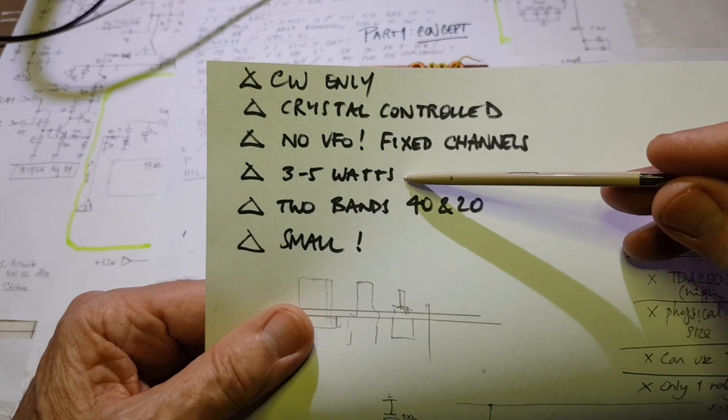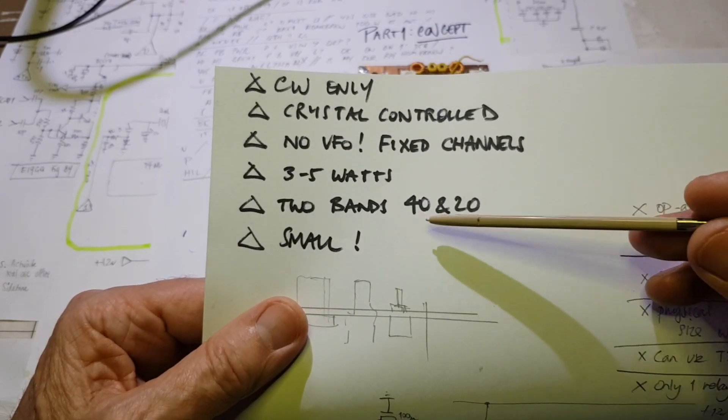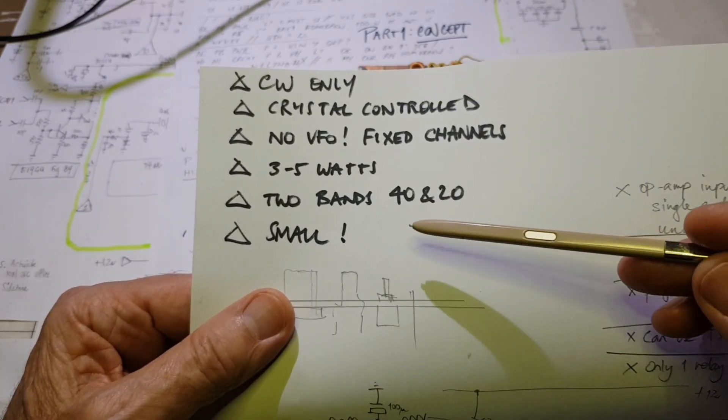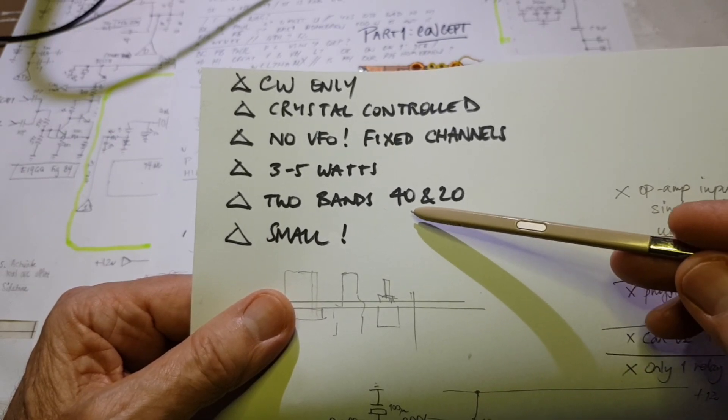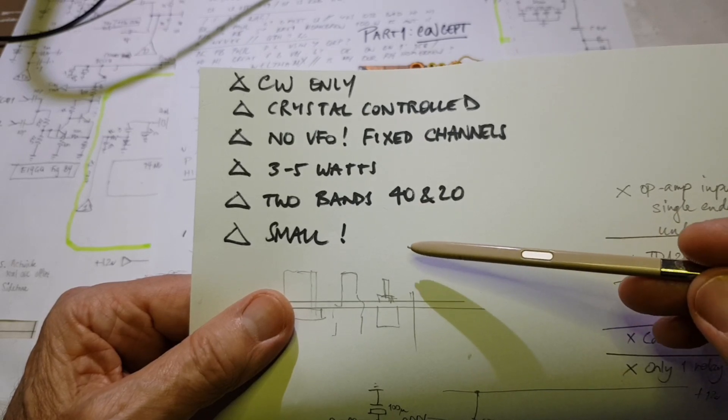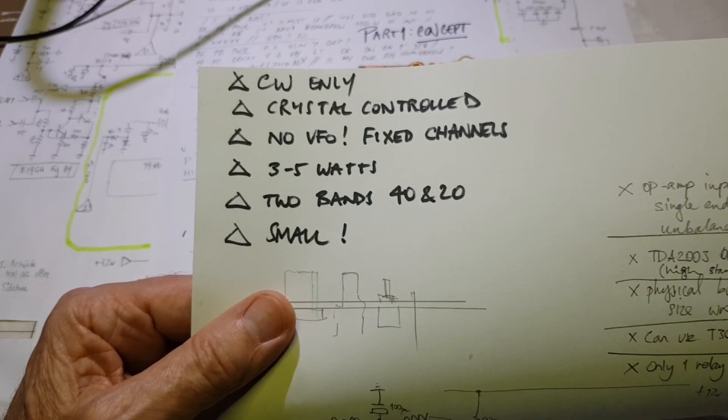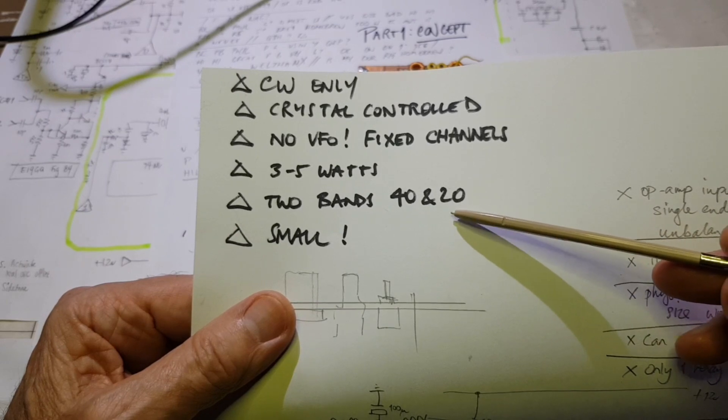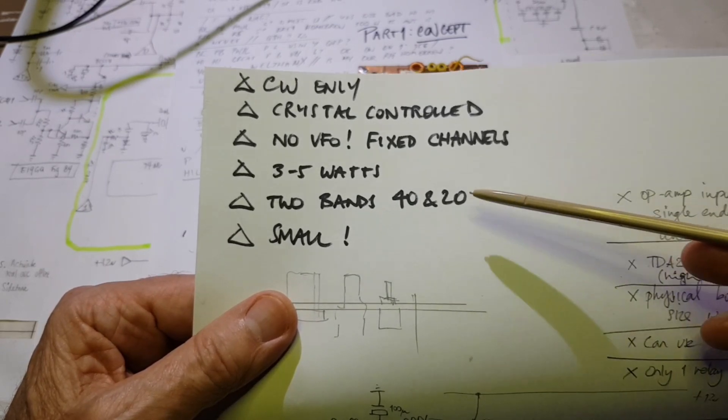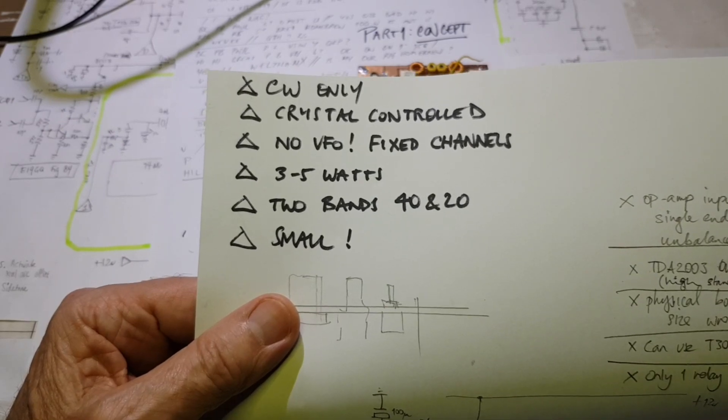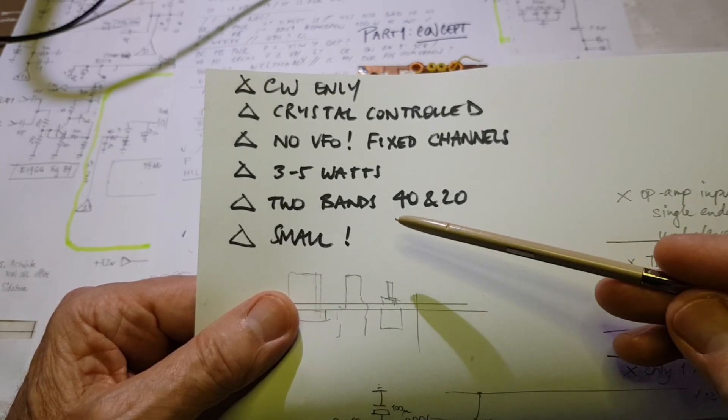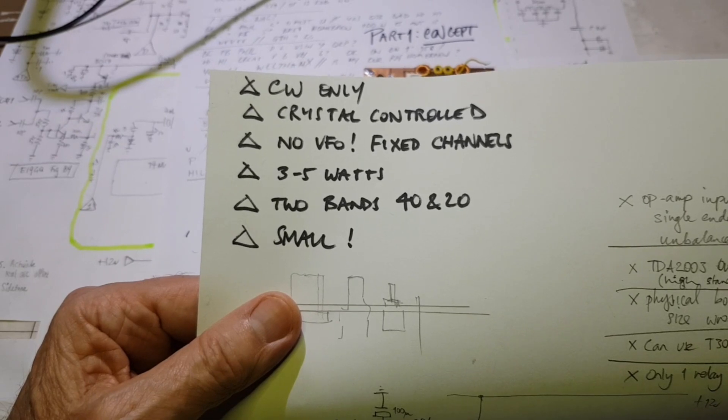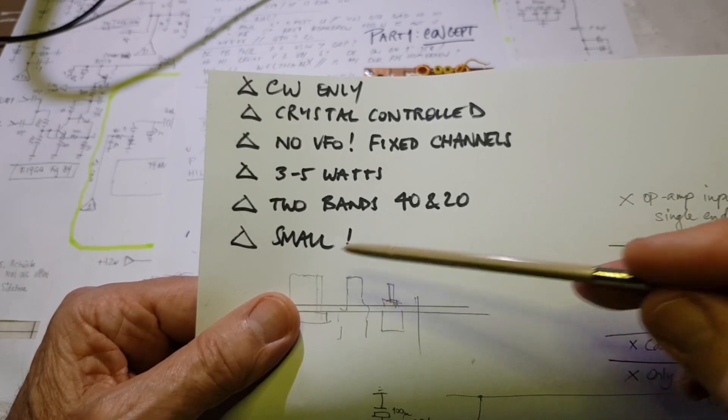QRP level power, so between 3 and 5 watts. I'd like it to cover two bands. Where I live in the southeastern states, it's not always wise to do an activation with just one band CW. You can find yourself in situations, particularly in the late morning or early afternoon when propagation is not great, stuck on 40 meters or 20 meters. When I've had two bands, typically 40 and 20, I've really never had a problem getting four or more QSOs. And of course it needs to be small.